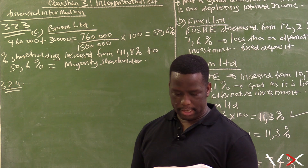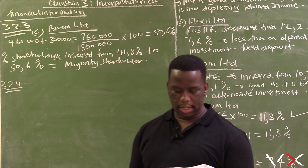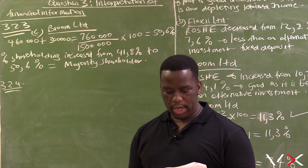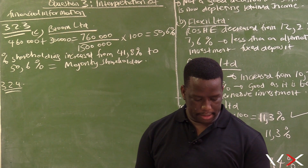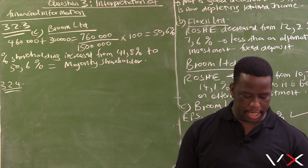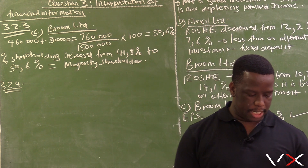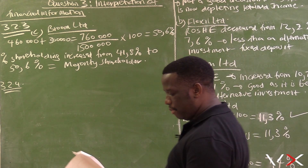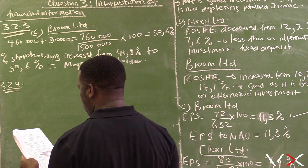Let's start with Broom Ltd. Looking at the decisions that were taken by Broom Ltd, there was a fixed asset purchased of 2 million 200 thousand.